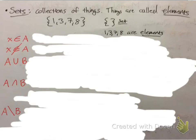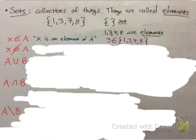So what is this x with a symbol, a? Well, that actually means x is an element of a. And here's an example of that. In purple, 3 is an element of the set {1, 3, 7, 8}. You can tell that the number 3 is there in the set — 3 is an element of that set.